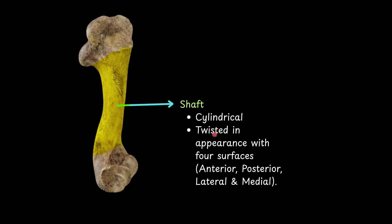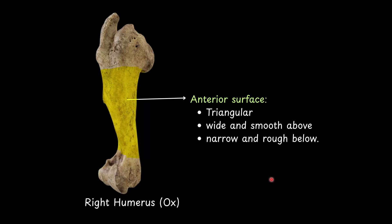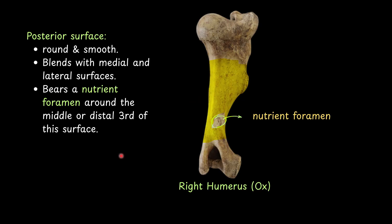The shaft is cylindrical and twisted in appearance with four surfaces: anterior, posterior, lateral, and medial. The anterior surface is somewhat triangular — wide and smooth above, rough and narrow below. The posterior surface is round and smooth and blends with the medial and lateral surfaces. It bears a nutrient foramen around the middle or distal third of the surface.